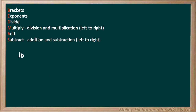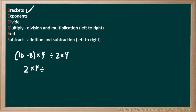Now we're moving on to 10 minus 8, all in brackets, times 4 divided by 2 times 4. This problem does have brackets, so that means we have to deal with the brackets first. So 10 minus 8 gives us 2, leaving us with 2 times 4 divided by 2 times 4. Now we're just left with division and multiplication, which we carry on from left to right.